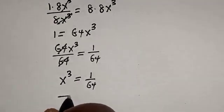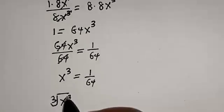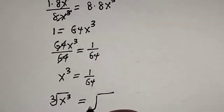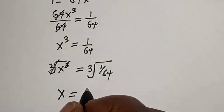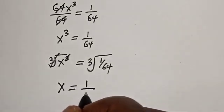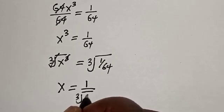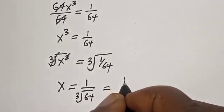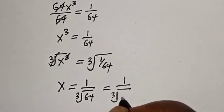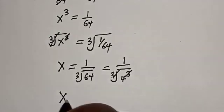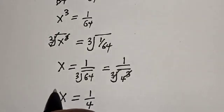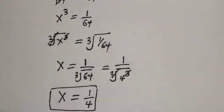Now let's take the cube root of both sides. The cube root of x raised to the power of 3 is equal to the cube root of 1 over 64. This one will cancel this, therefore x is equal to 1 over 4. That is our final answer. Before you leave, like, share, comment, subscribe, and see you in the next video. Thank you, bye bye.